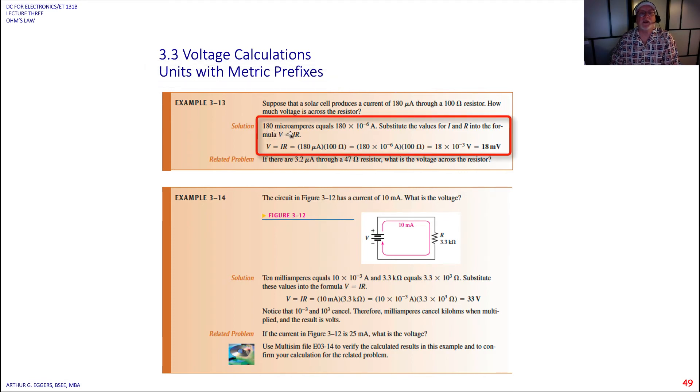So if I have 180 microamps, that's 180 times 10 to the minus sixth. I can substitute that 180 times 10 to the minus sixth into the relationship for the current, 100 ohms of resistance. I could call that 10 squared, right?